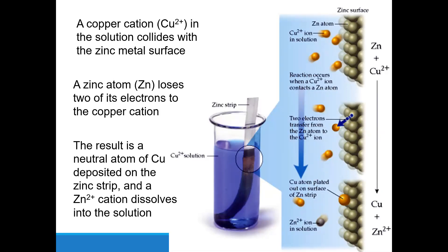Why does the precipitate happen on the surface of the zinc? Why doesn't the precipitate happen just in the middle of the solution? Because the zinc atoms were in the solid state and they can't leave. So the only way the reaction could happen is if the copper ions, which are in the solution, collide with the surface of the zinc. So the reaction has to happen on the surface of the zinc metal.